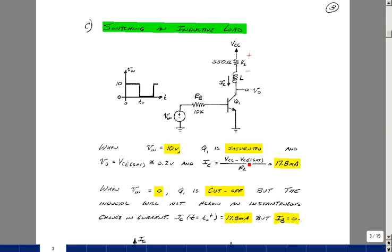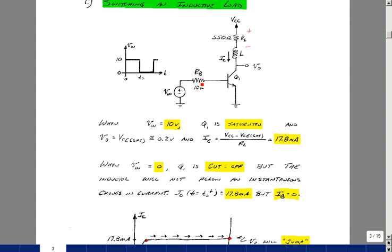With 10 volts and 0.2 and 550 ohms, we're looking at about 17.8 milliamps. Our base current is still what it was in the previous case, and so the ratio of IC to IB is still less than beta-f.